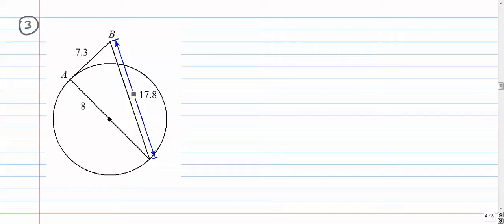Number 3. Is segment AB tangent to circle C? Let's put a letter over here too. We'll call this point D. So this one's a little bit different. It has a diameter drawn in. And we're trying to determine if this is a right angle right there. To do that, we're going to use the Pythagorean theorem again.